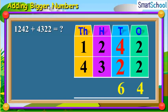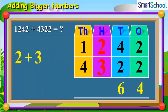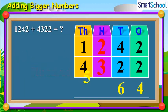Now, let us move on to the hundreds digits. Add the hundreds digits together, which will be 2 plus 3 is equal to 500. Now, place 5 at the hundreds place.